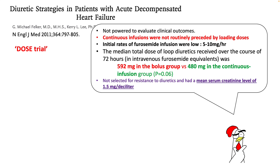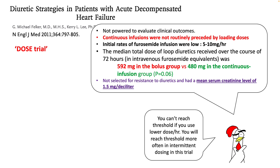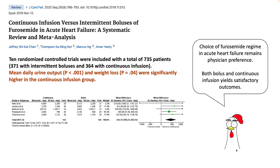However, the DOSE trial has serious limitations. The most important was that continuous infusions were not routinely preceded by a loading dose, and the rate of furosemide infusion was very low at 5–10 mg/hour. If you look at the total amount of loop diuretic received over 72 hours, it was actually higher in the bolus group compared to the continuous group. From your pharmacokinetics knowledge, you cannot really reach threshold if you use too low a dose per hour.